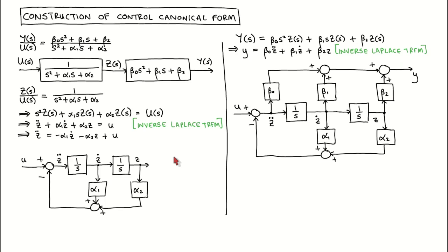For the control canonical form, we start with a general second order transfer function. We split the transfer function into two transfer functions — the denominator and the numerator — and label the middle signal as z. We now focus only on the first half: the transfer function from u to z. We multiply across, which results in this equation, then apply the inverse Laplace transform and rearrange so that only z-double-dot is on the left-hand side.